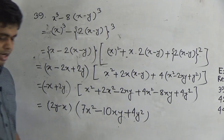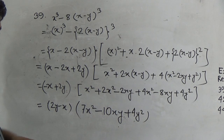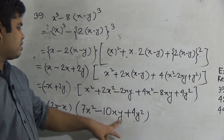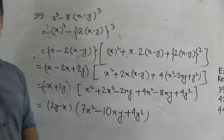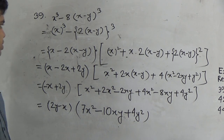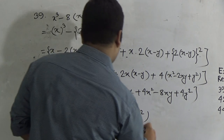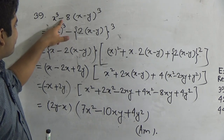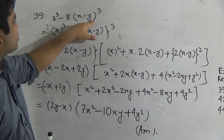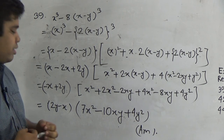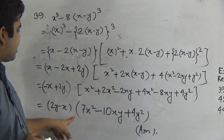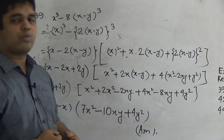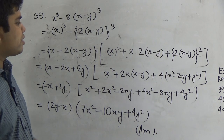So dear student, the answer is (2y minus x) into (7x² minus 10xy plus 4y²). I hope you have understood. That means if we resolve x³ minus 8(x minus y)³, we get factors (2y minus x)(7x² minus 10xy plus 4y²).